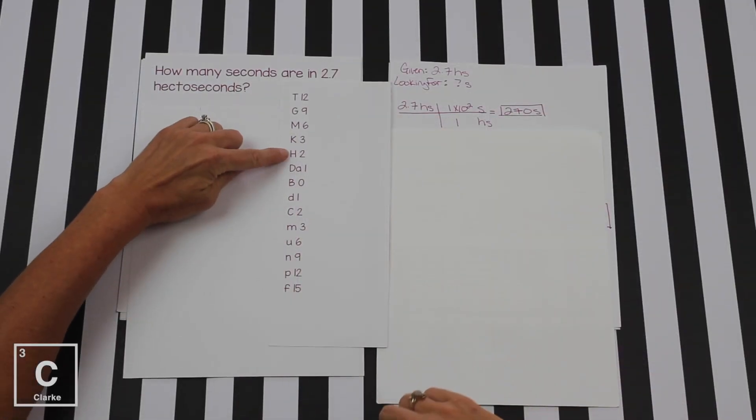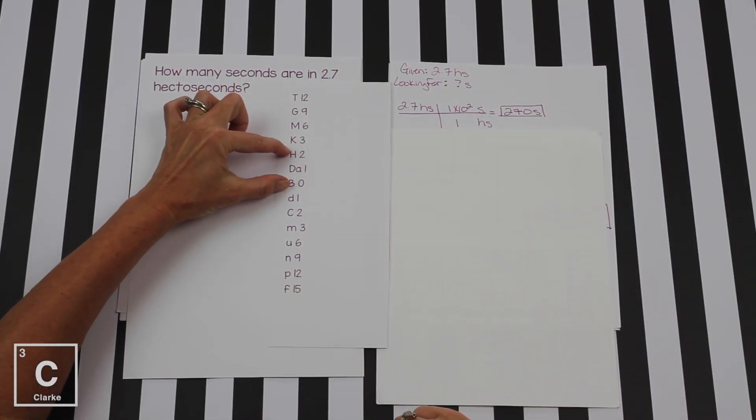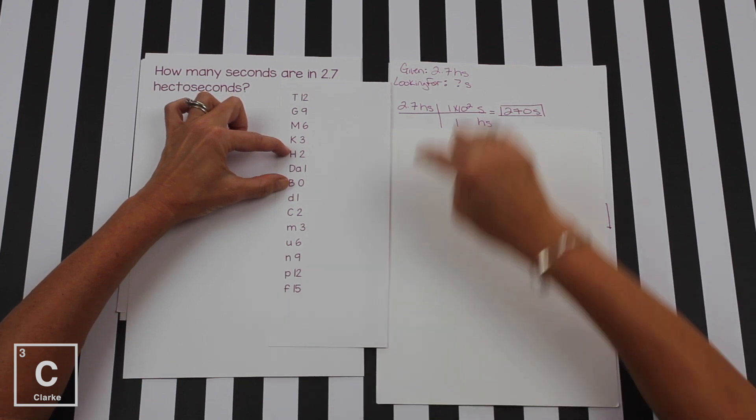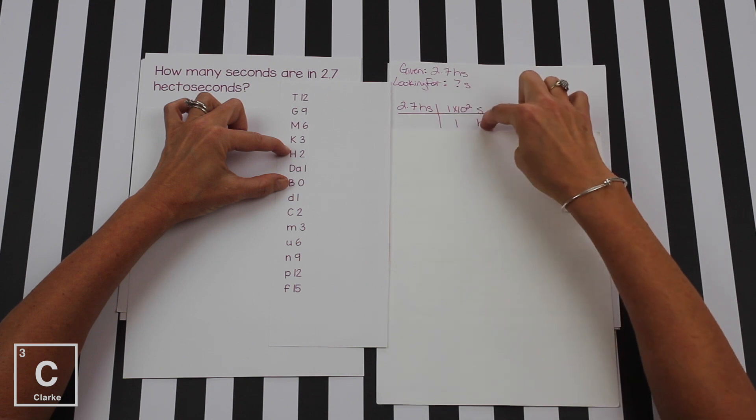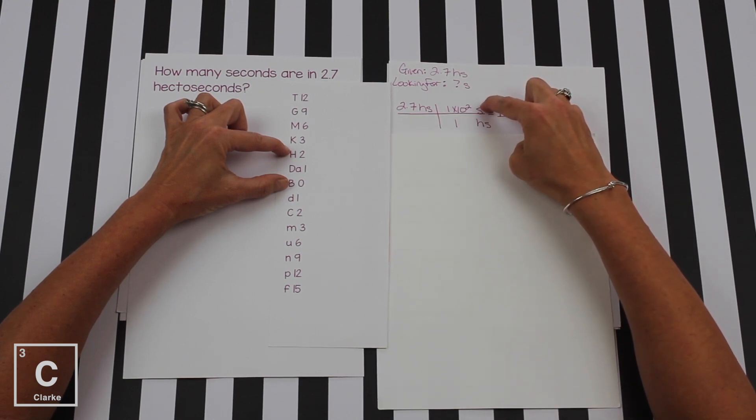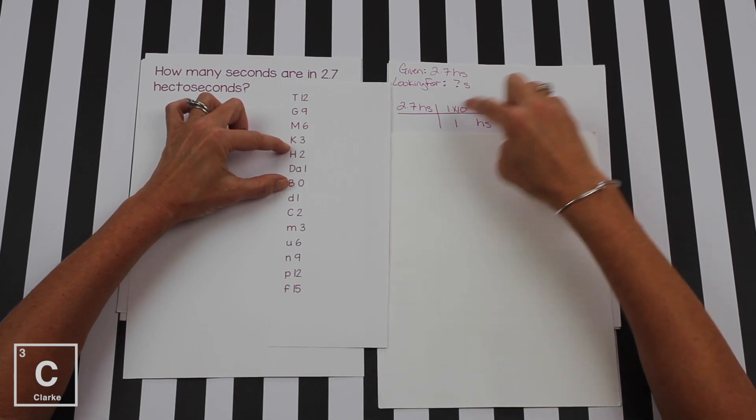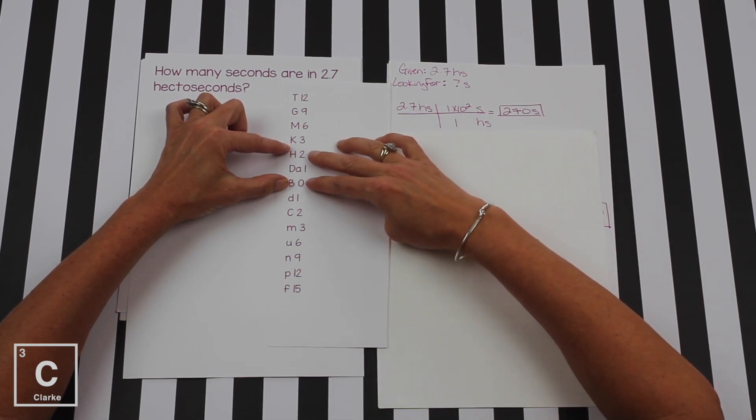So we're going to put our 2.7 in our given. We've got to find our conversion factor. Hectosecond is a base unit, so we know we only have one step, only one conversion. But we've got to make sure and orient it correctly. Remember, whatever is on top comes on bottom. So our hectoseconds go on bottom, our seconds go on top.